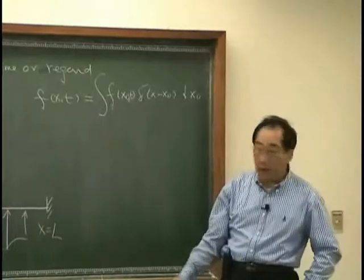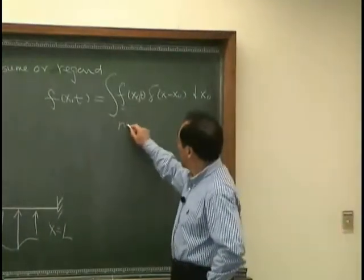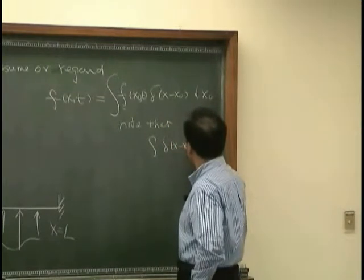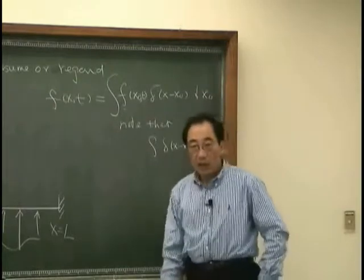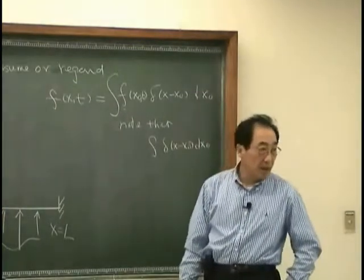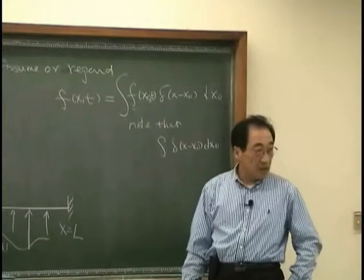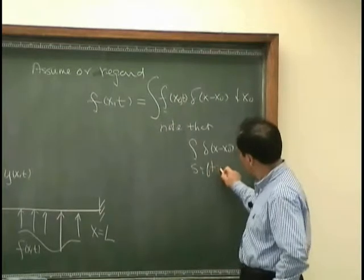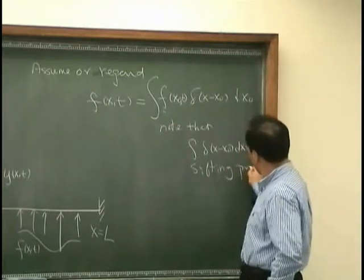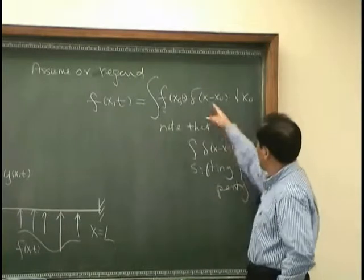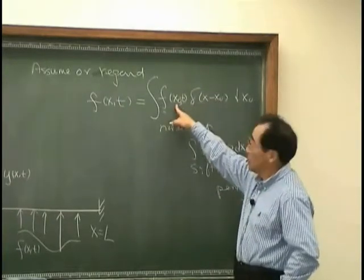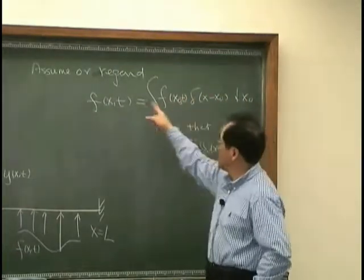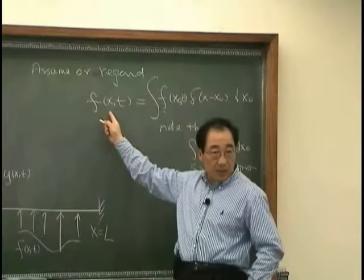Because delta function - note that integral of delta(x-x0) dx0 is 1 when x equal x0, so it has a certain property. So, when x equal x0, this whole function becomes f(x,t). That is the property of delta function.